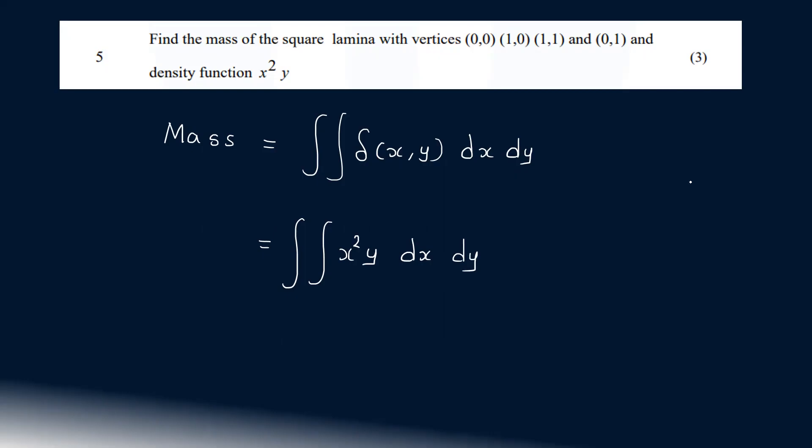Now, looking at the square lamina on the x-axis and y-axis with points (0,0), (0,1), (1,0), and (1,1), this forms a square region. The x values change from 0 to 1, and the y values also change from 0 to 1. So we have limits from 0 to 1 for both variables.